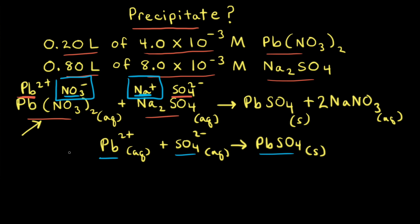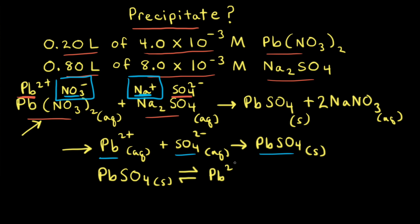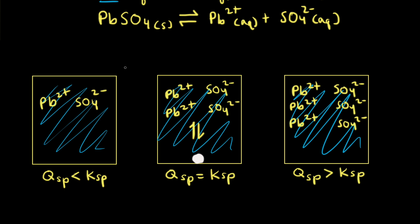Writing the overall equation and the net ionic equation are really optional for a problem like this. What we really need to do is identify the precipitate and then write out the dissolution equation. PbSO4 would be our possible precipitate. If it dissolves in water, we would form lead two plus cations in aqueous solution and sulfate anions in aqueous solution. The reason why it's important to write out the dissolution equation is because we can write a Ksp expression from it.